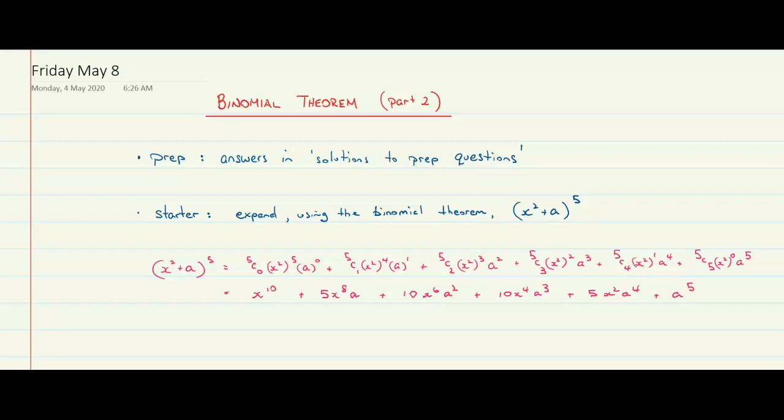We're going to do some more examples, because with the binomial theorem, what we're doing at the moment is expanding. The theorem itself is about the coefficients — the development of the coefficients. That's why we took 30 minutes on it in the last screencast, because where it comes from is what's interesting. There's no point just chucking it at you and saying 'use it' — you've got to see where this stuff is pulled from, and how all these areas of mathematics are interrelated.